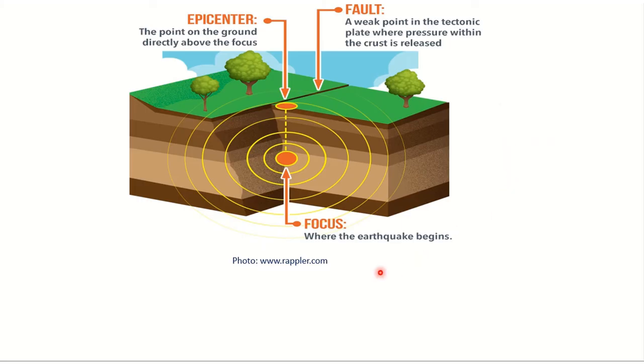An earthquake is the result of a sudden release of energy in the crust that creates seismic waves. Seismic waves are the waves of energy caused by the breaking of rock during an earthquake. The main two types of waves are body waves and surface waves. Body waves occur in two types: Primary waves, which is represented by letter P, and secondary waves, which is represented by letter S. P waves are also known as compressional waves because of the pushing and pulling they do. The S wave or secondary wave is the second wave you feel in an earthquake. An S wave is slower than a P wave and can only move through solid rock, not through any liquid medium.